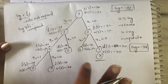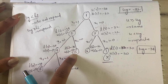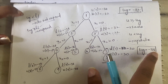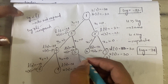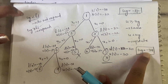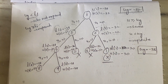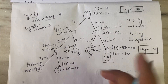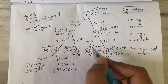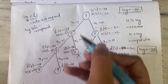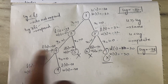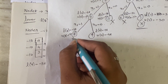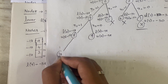Now recheck the conditions. For node 5, lower bound is minus 36 and the global upper bound is now minus 38 — minus 38 is less than minus 36, so you do not expand node 5. Similarly, minus 38 is less than minus 32, so that node is also killed. Since we updated the global upper bound to minus 38, both those nodes are killed. Now expand node 8.